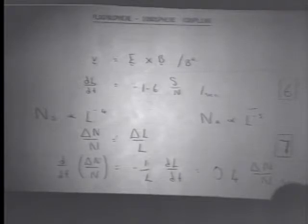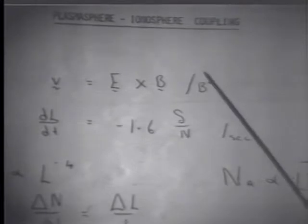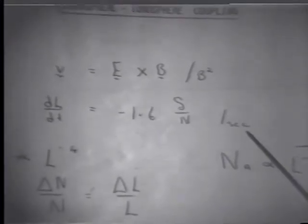I now wish to consider plasmasphere-ionosphere coupling. Due to the high conductivity along the geomagnetic field lines, the electrostatic polarisation field will be mapped almost unattenuated up into the plasmasphere. Assuming a westward electrostatic polarisation field, and using the Schoen hydromagnetic relation, we obtain equation 6, which gives the cross-L motion of the duct.